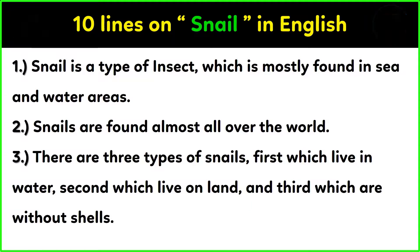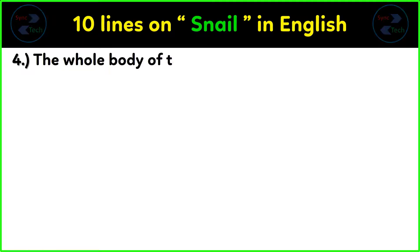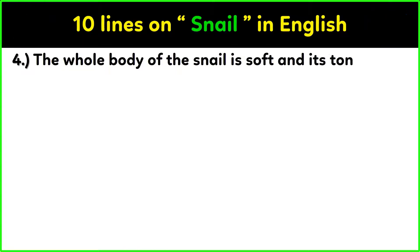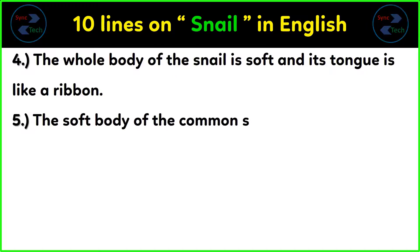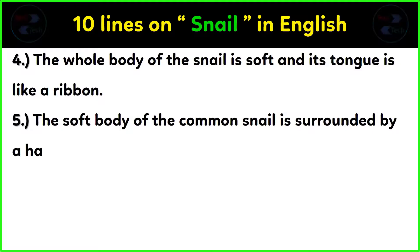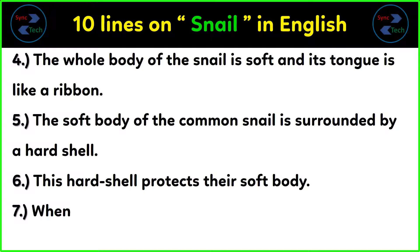The whole body of the snail is soft and its tongue is like a ribbon. The soft body of the common snail is surrounded by a hard shell. This hard shell protects their soft body.